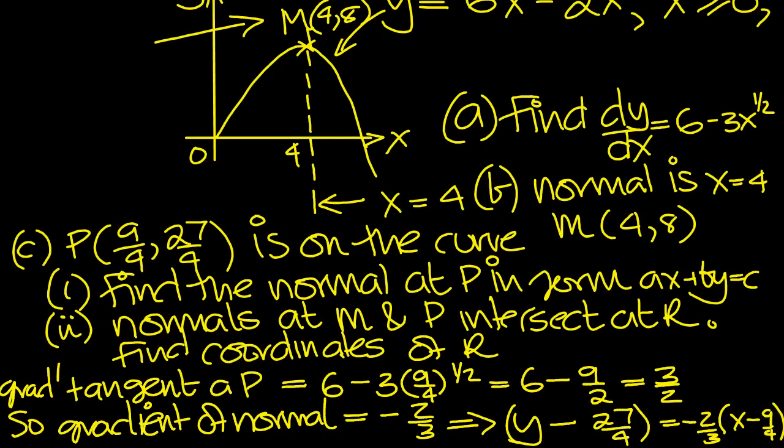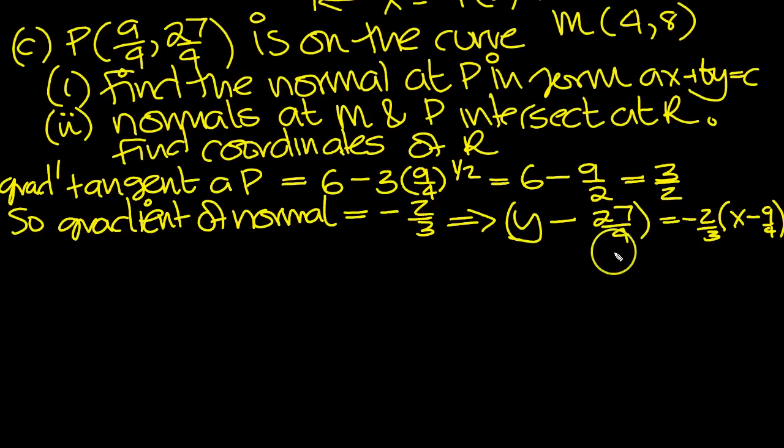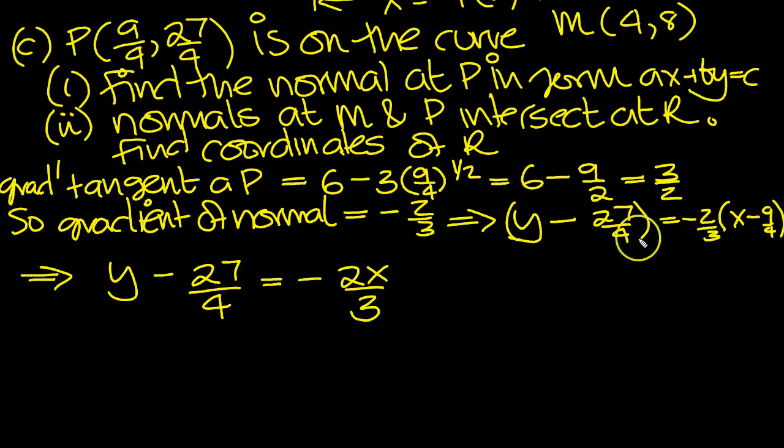Let's simplify this in attention to this part 1 then. We're doing the normal, so we need to simplify this equation. So y minus 27 over 4 is equal to minus 2x over 3, when we expand the bracket, plus, and it's 18 over 12, which is the same as 3 over 2, when you divide top and bottom by 6.